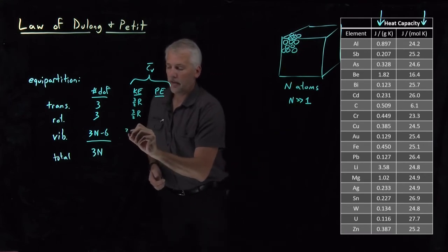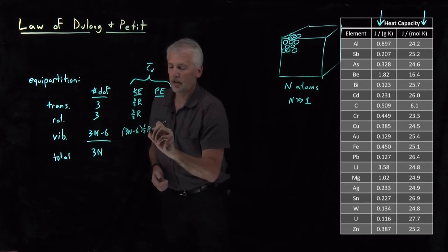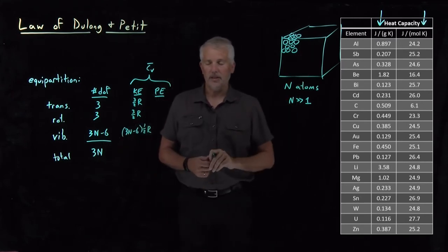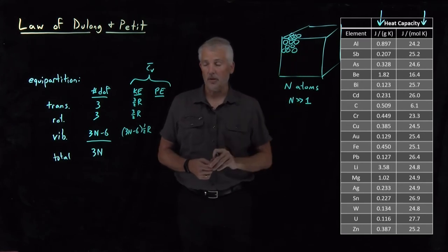And then 3N minus 6 factors of one half R from all these different vibrational modes of the atoms within this crystal lattice.